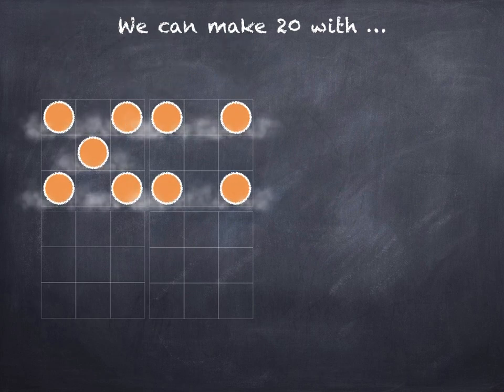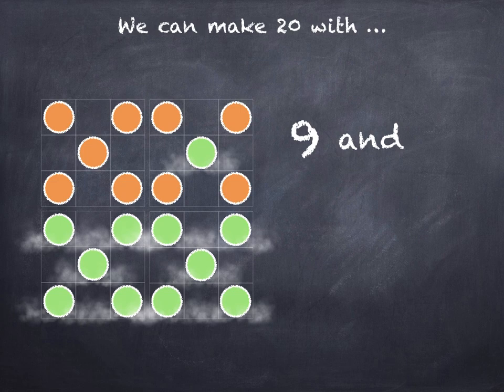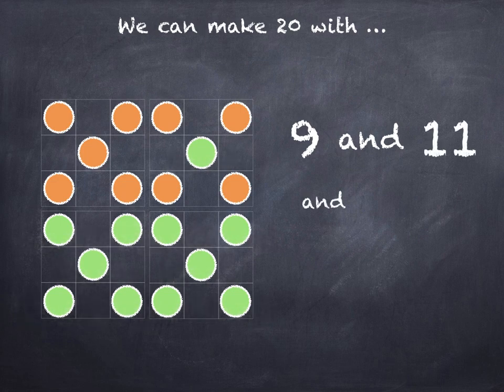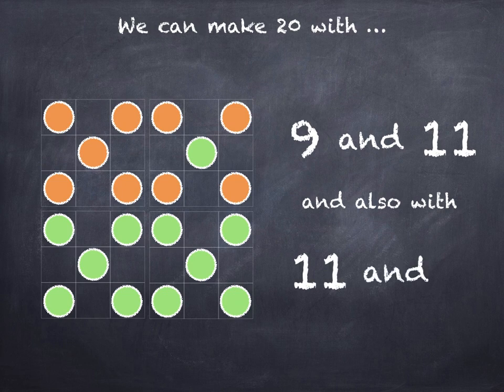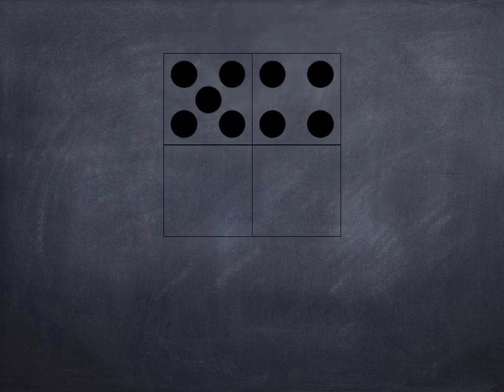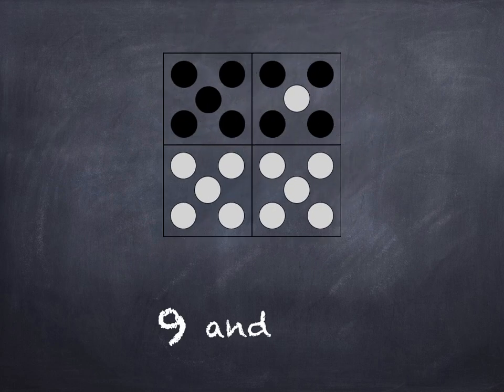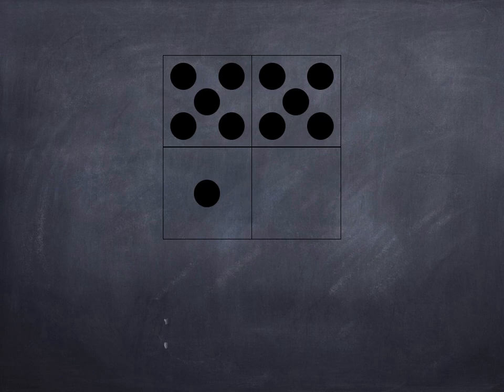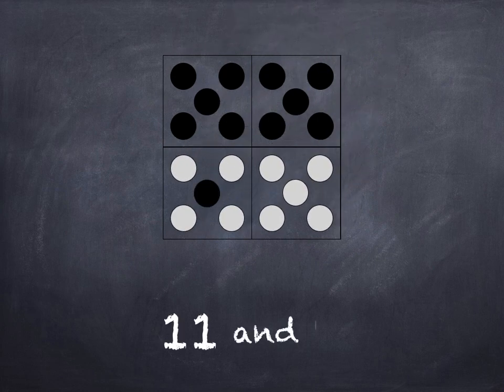We can make 20 with 9 and 11, and also with 11 and 9.